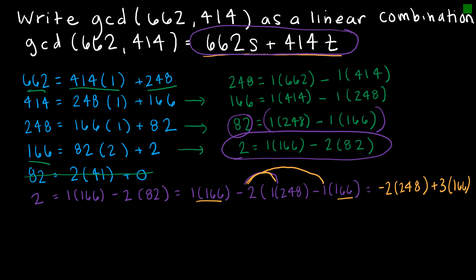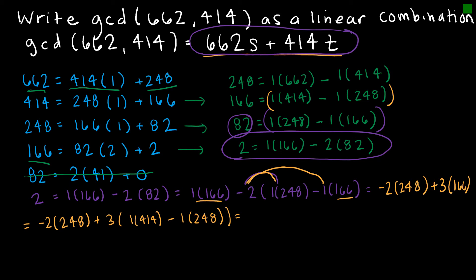Continuing the process, I now have negative 2 times 248 plus 3 times — and instead of 166, I substitute: 3 times (1 times 414 minus 1 times 248). Then I simplify. I'm asking how many 248s and how many 414s I have. In 414s, I have 3 times 414. In 248s, I have minus 3 and minus 2, so minus 5 248s.